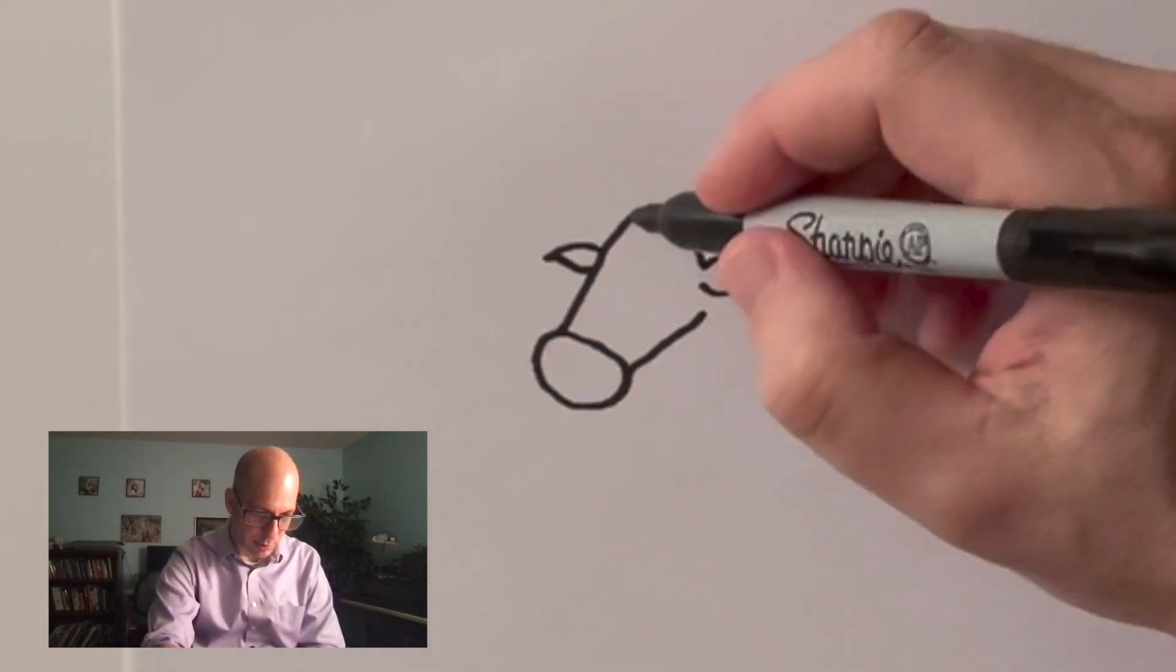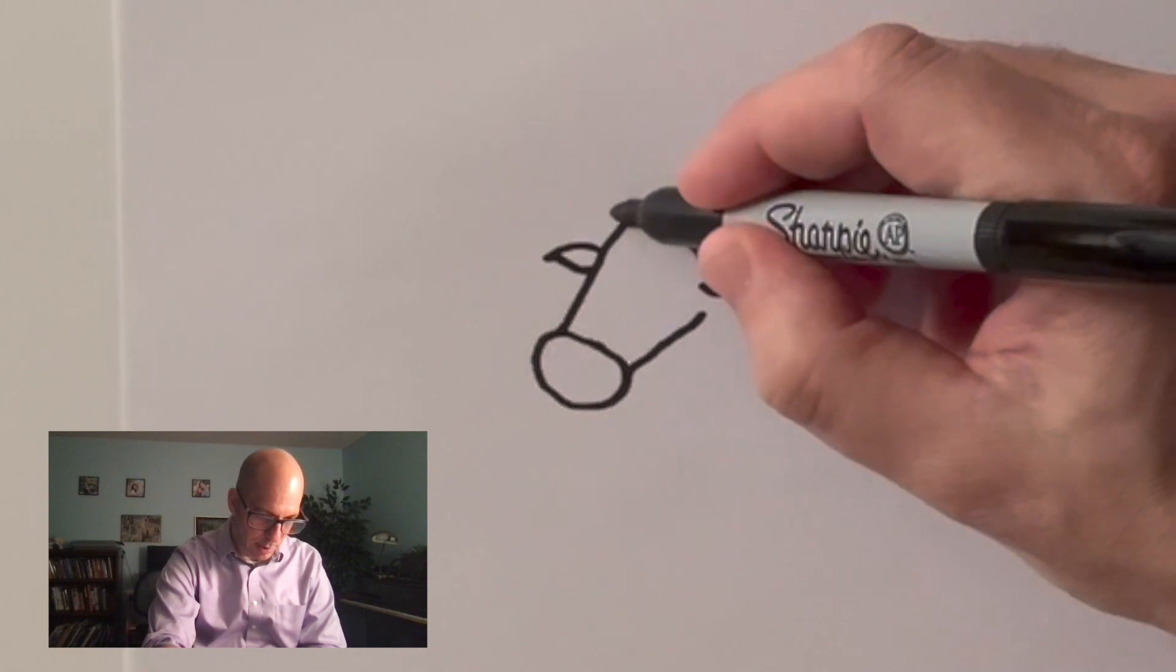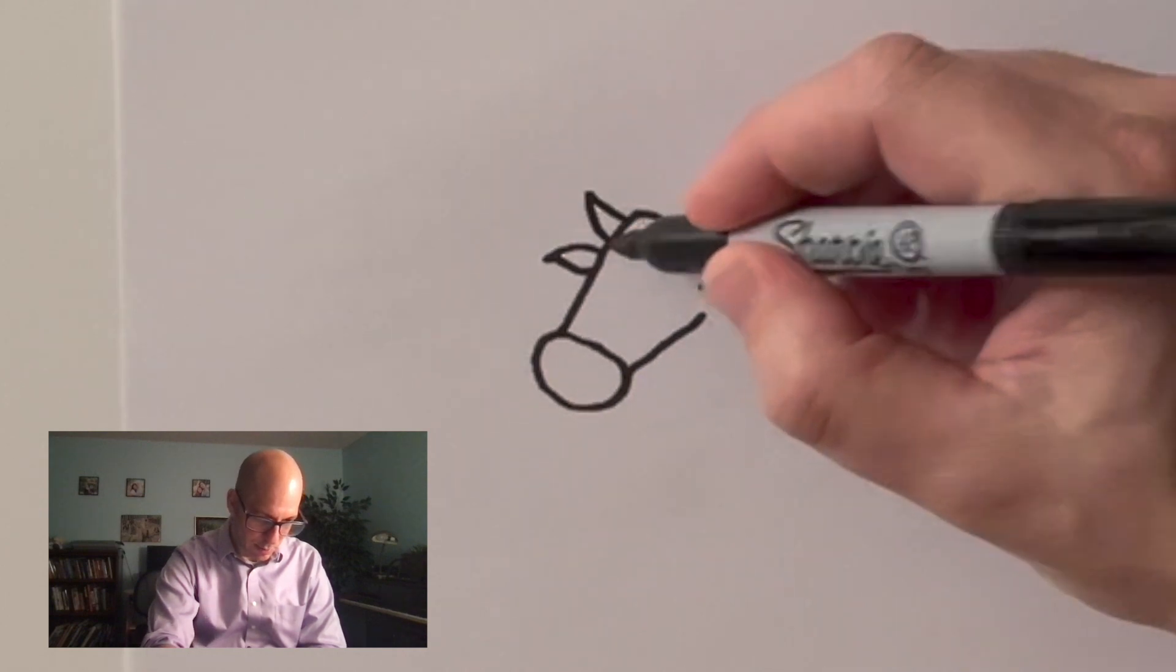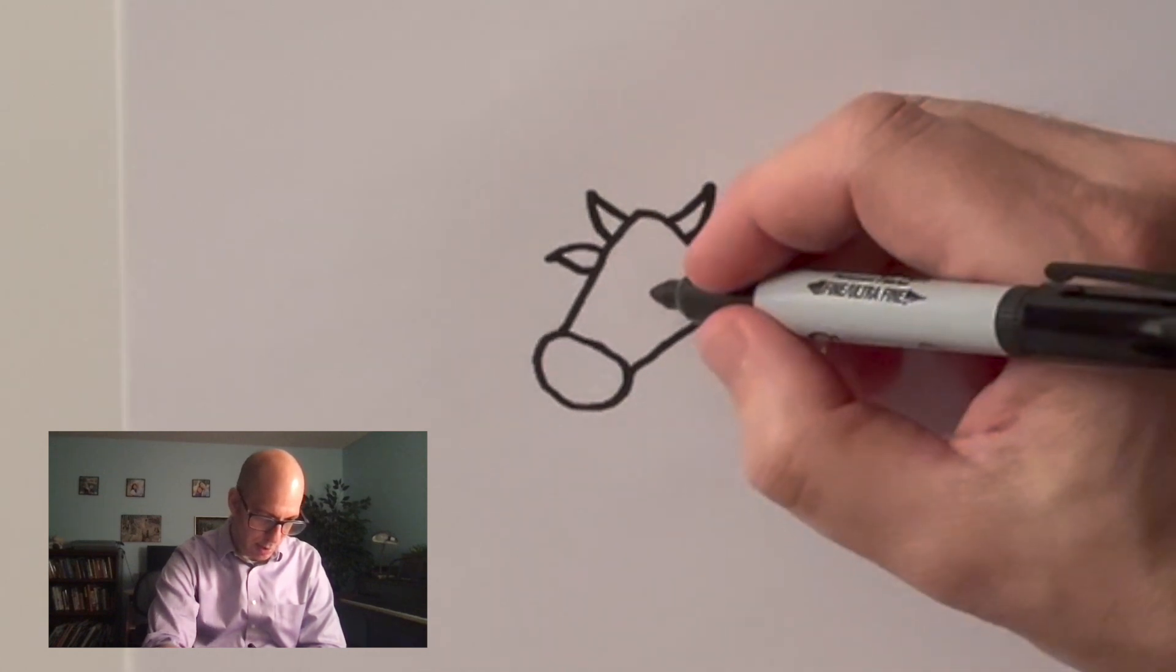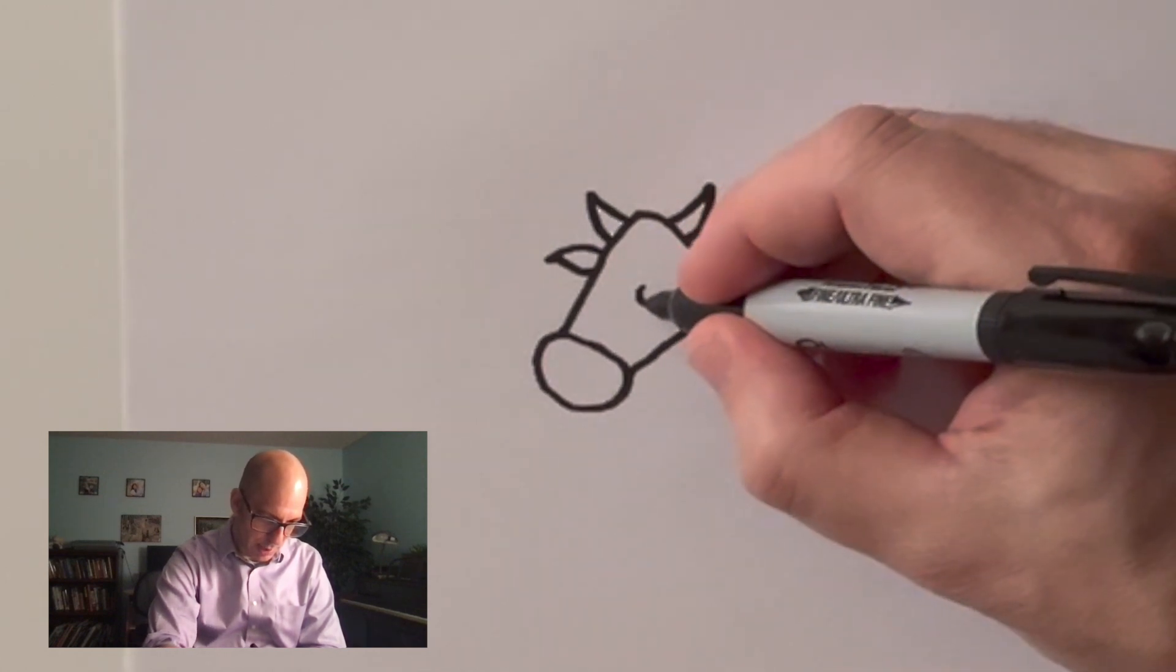Maybe it just looks like a salt shaker with wings. I'm gonna give my cow some little horns. There we go, cow starting to come together here. And oh, what the heck, I'll give my cow some eyes.